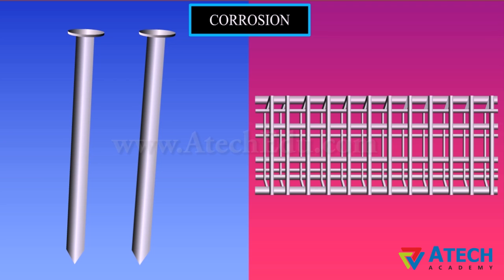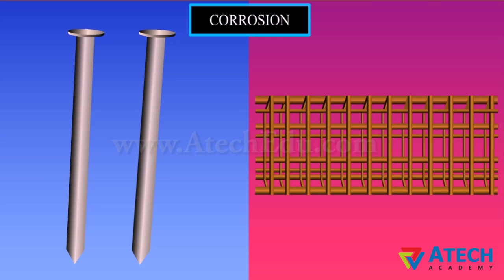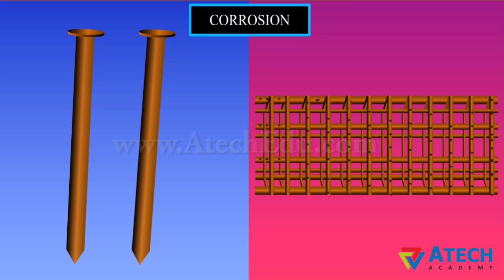Iron articles are shining when new but get coated with a reddish-brown powder when left for some time — this process is called rusting of iron. Iron is attacked by substances like moisture, air, and acids, and is said to corrode; this process is called corrosion.